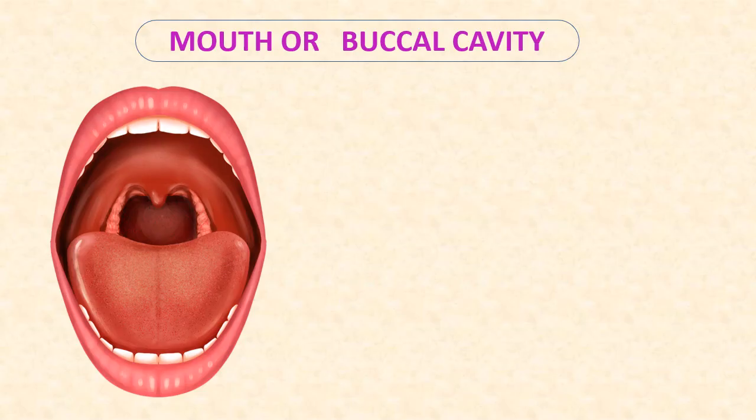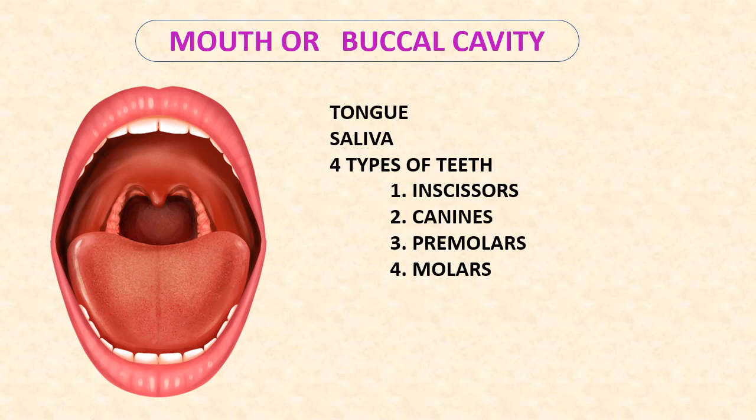Taking of food into the body is called ingestion. The buccal cavity or mouth contains tongue, saliva and four types of teeth. They are incisors, canines, premolars and molars. The tongue is a muscular organ present inside the mouth, fixed at the posterior end. It has taste buds, and it helps in mixing the food with saliva, swallowing and tasting the food.